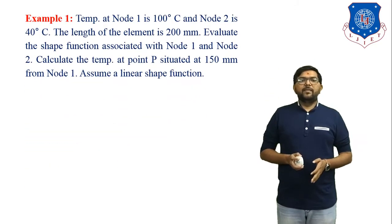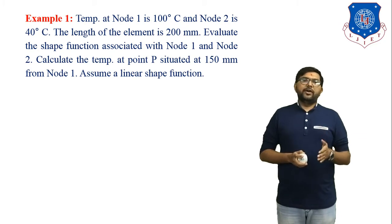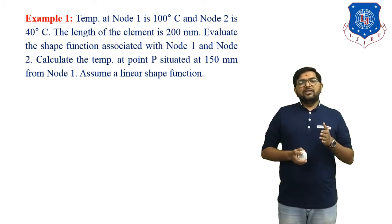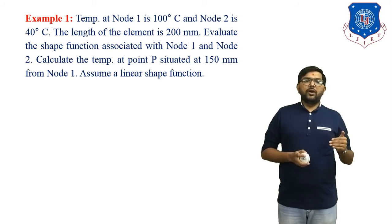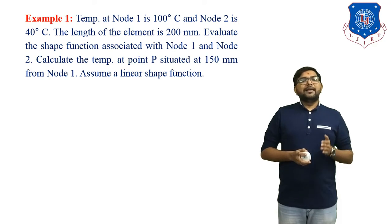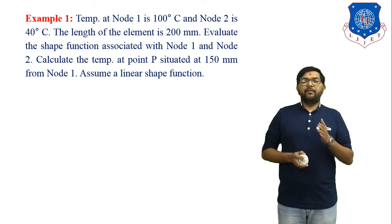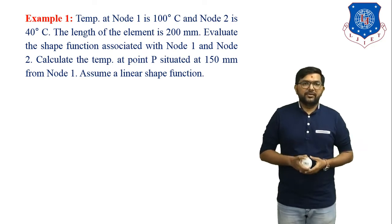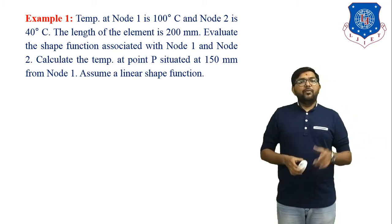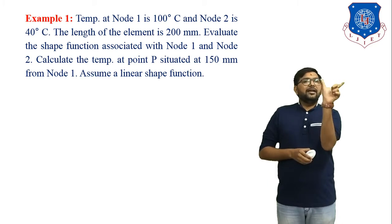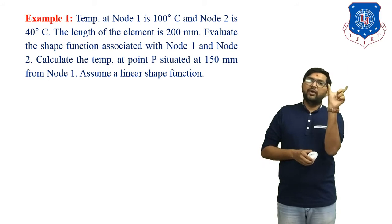Example number 1: The temperature at node 1 is 100 degree Celsius and node 2 is 40 degree Celsius. The length of the element is 200 mm. We need to evaluate the shape function associated with node 1 and node 2, and calculate the temperature at point P situated at 150 mm from node 1. Assume a linear shape function. In this numerical we have to find temperature at point P. We have one linear element where temperature at node 1 is 100 degree Celsius and temperature at node 2 is 40 degree Celsius.